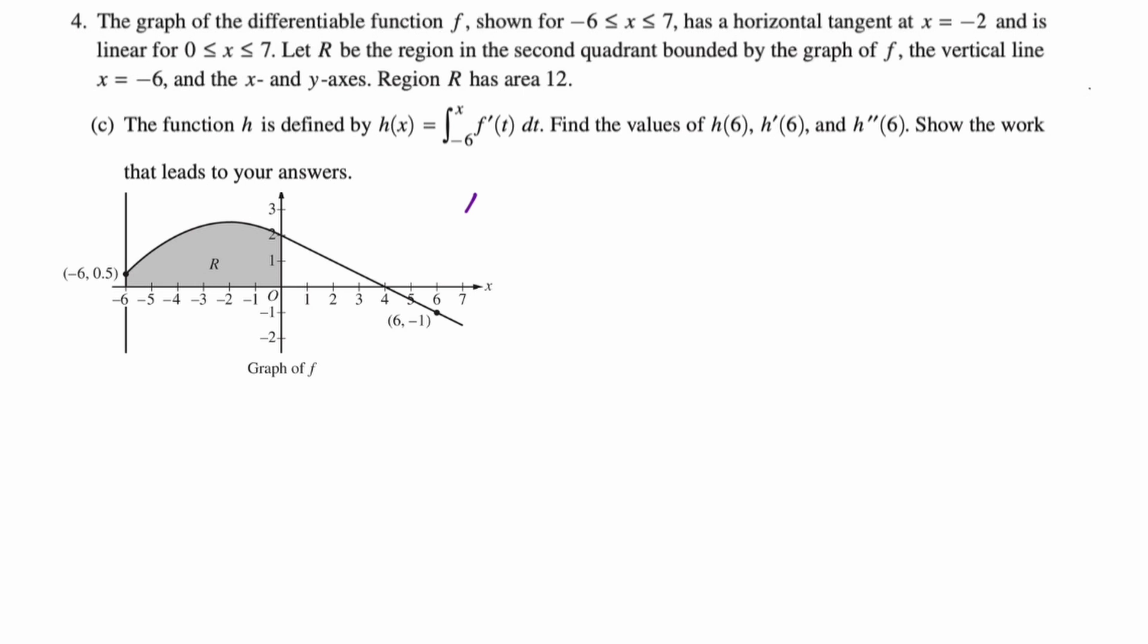So h of six is going to be the integral from negative six to six of f prime of t dt, which means that we're just going to be doing f of t from negative six to six, which is going to be f of six minus f of negative six. And so you can see it's given that f of six is negative one, and at negative six, it's 0.5. So that's going to give us negative 1.5.